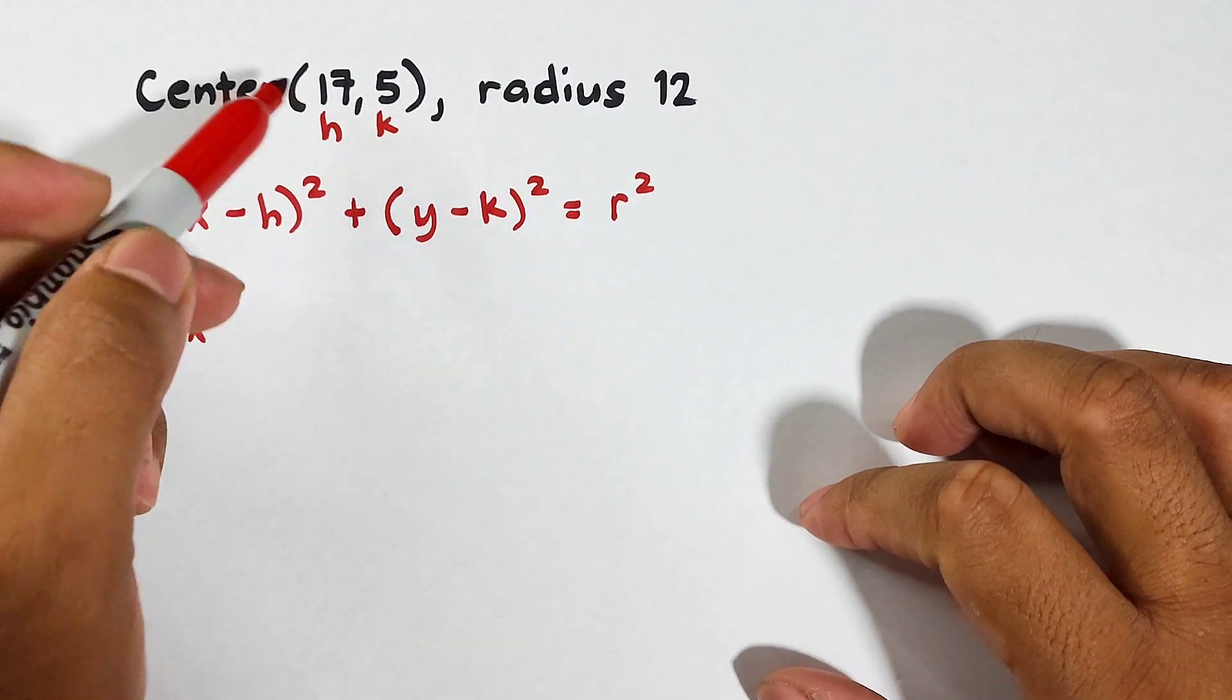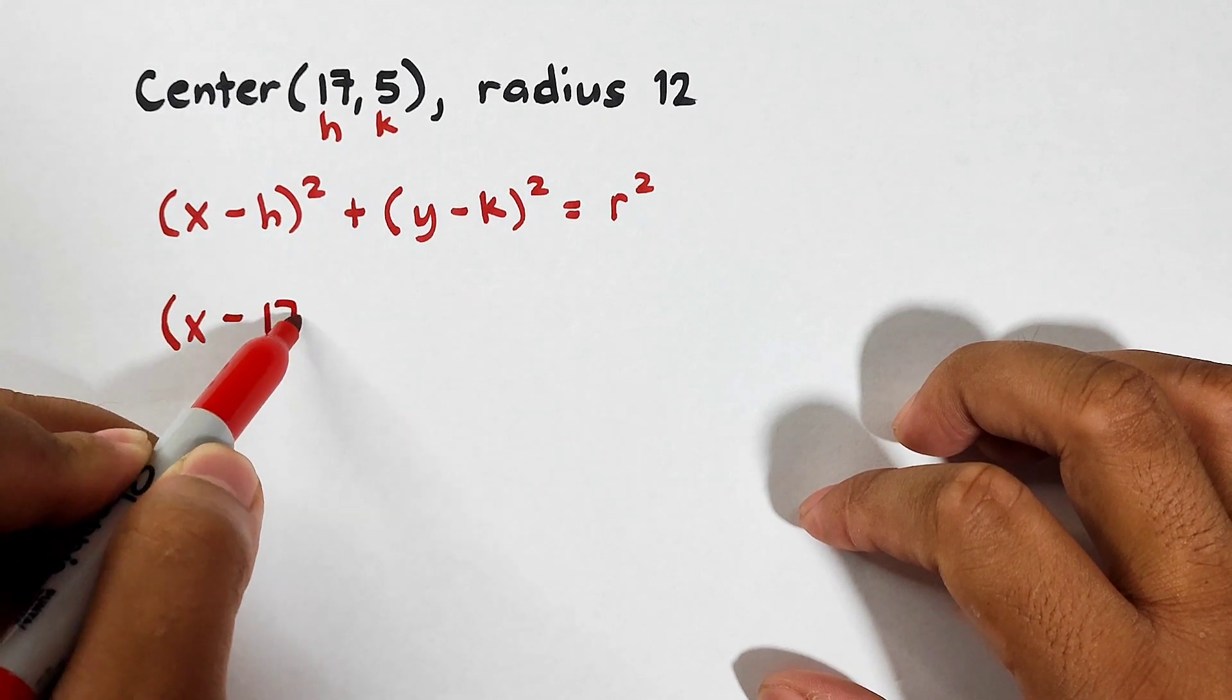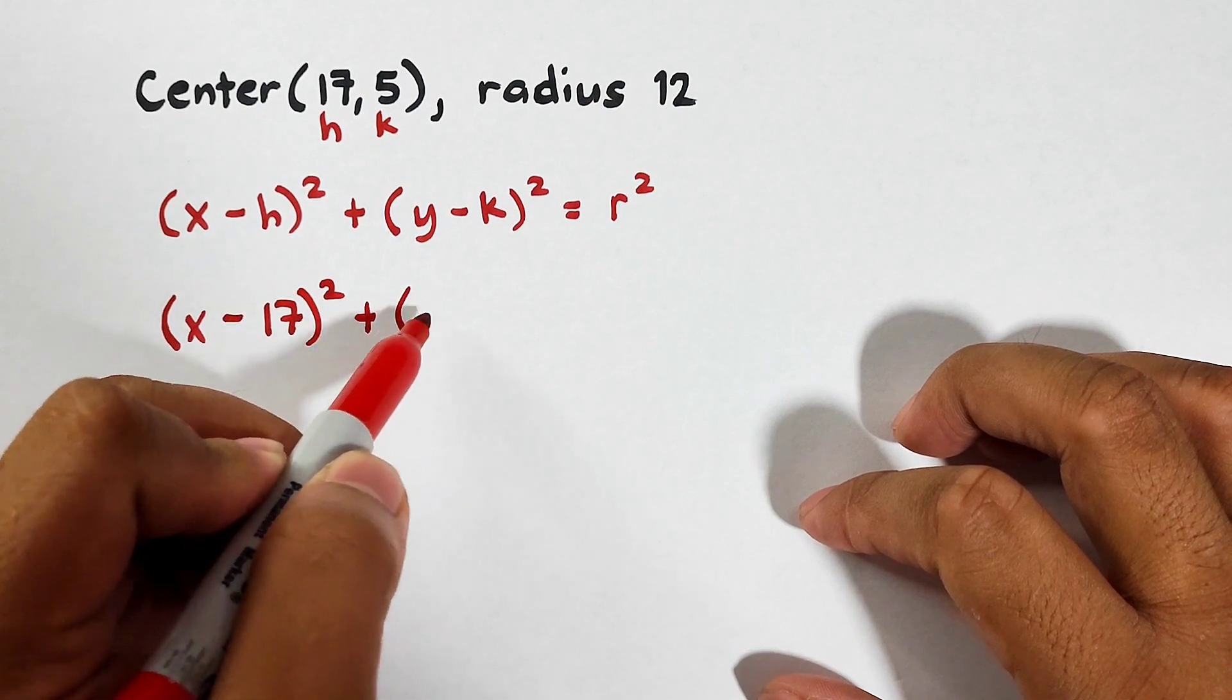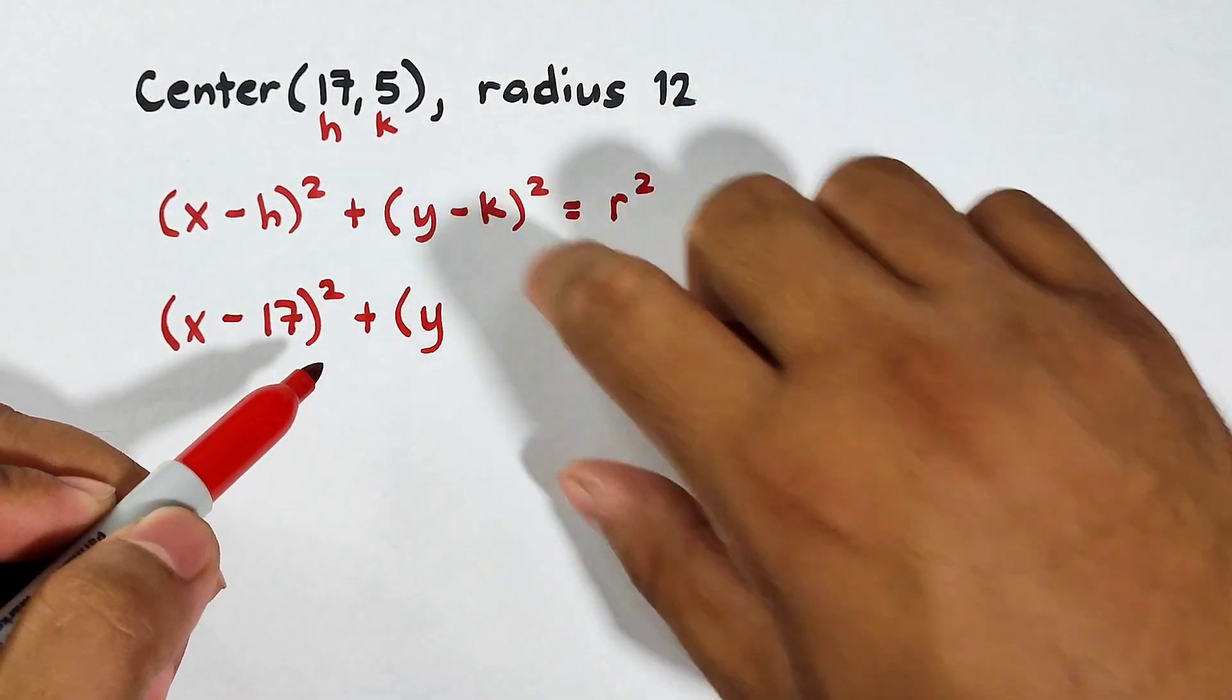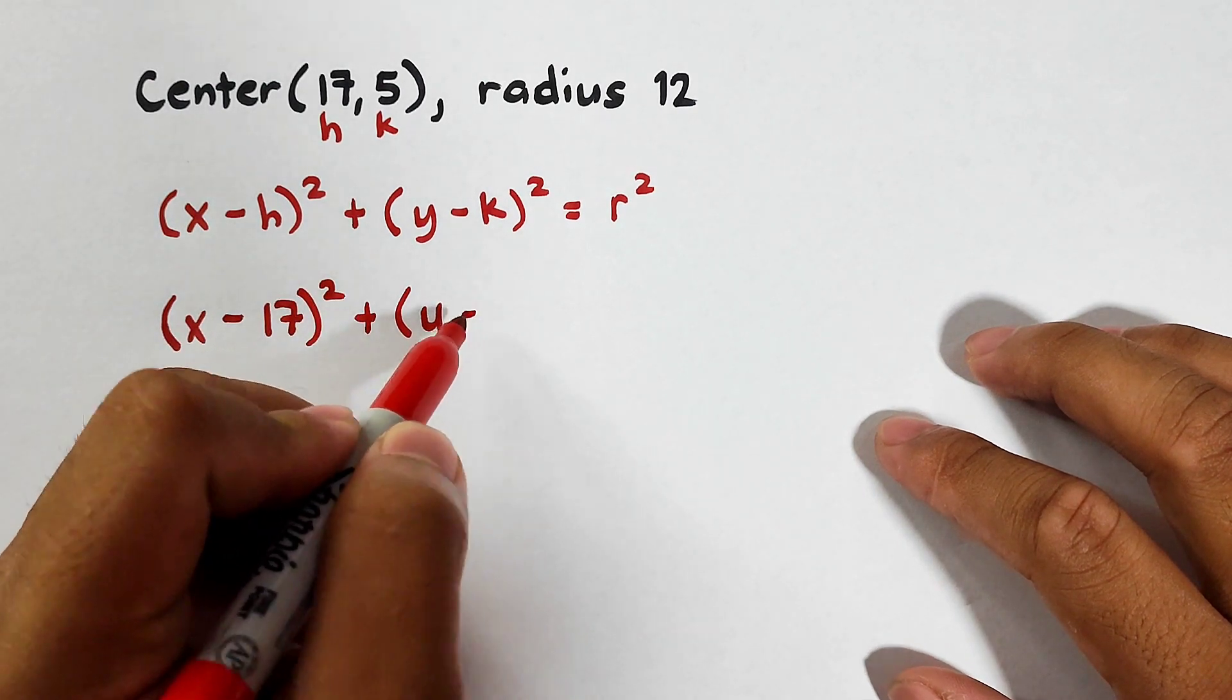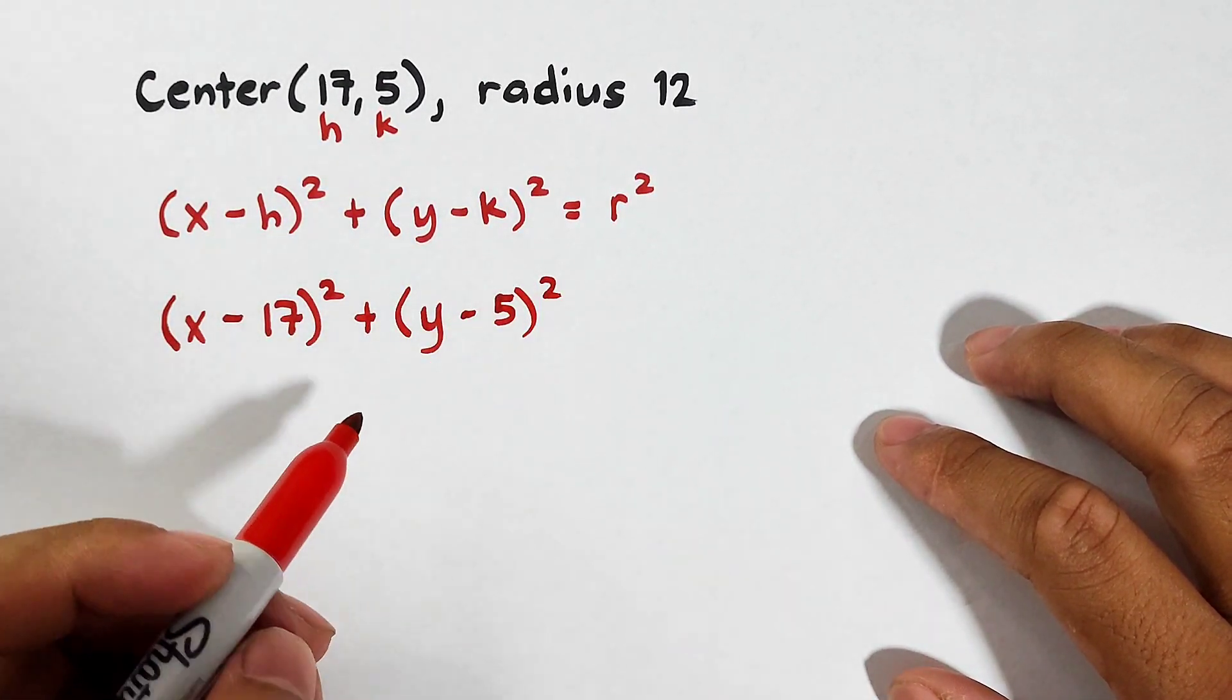If this is positive 17, write it here. Minus 17 raised to the second power plus y. Your k is also positive. Additive inverse of 5 is negative 5. So that is minus 5 raised to the second power.